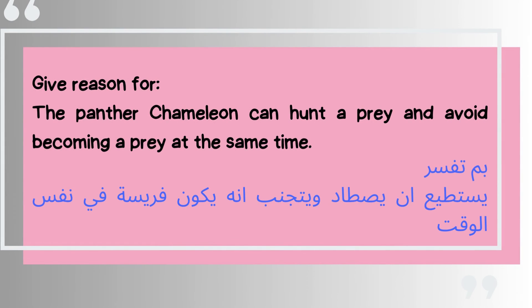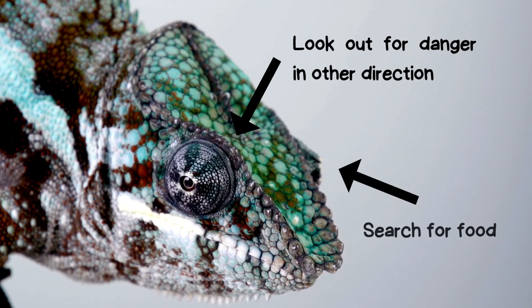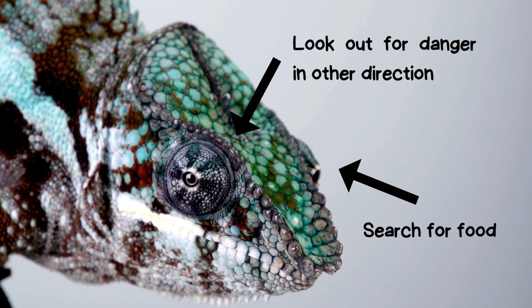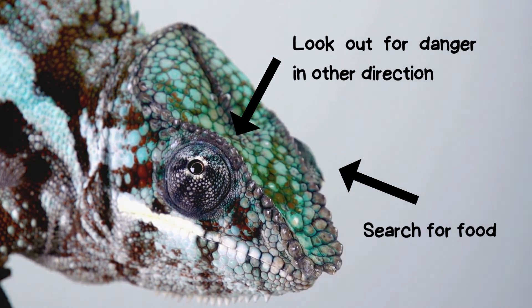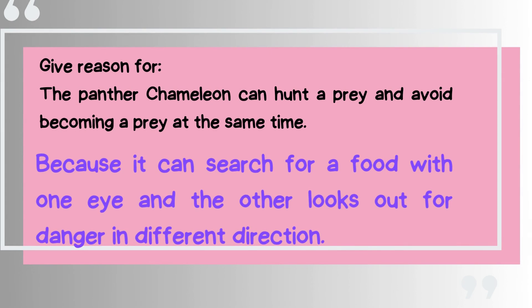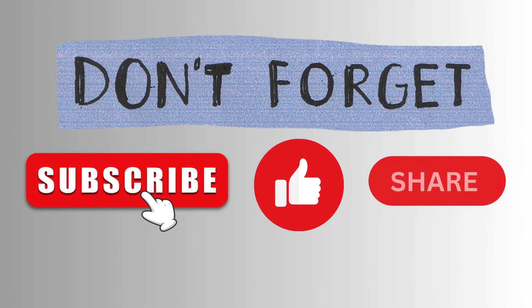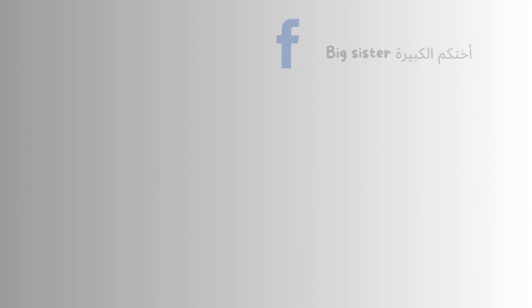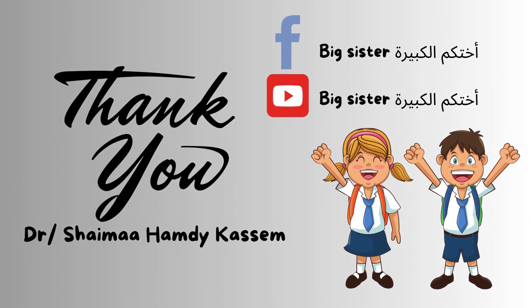Here is an important question: give reasons why the Panther Chameleon can hunt prey and avoid becoming prey at the same time. Because it has eyes that face opposite directions, one eye searches for food and the other looks out for danger. With this information we have finished our lesson. Don't forget to subscribe, like, and share my channel. Thank you for watching — see you in the next video, inshallah. Goodbye!